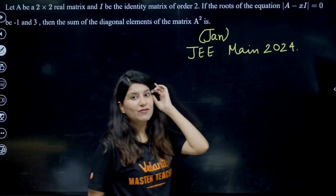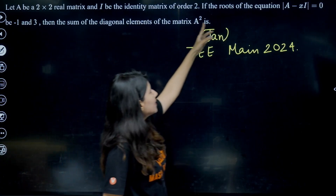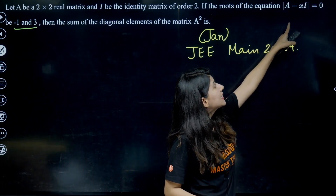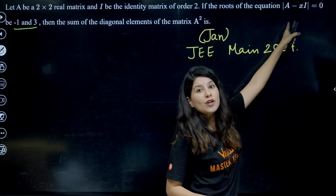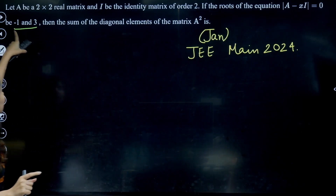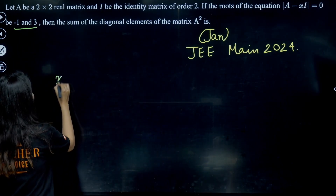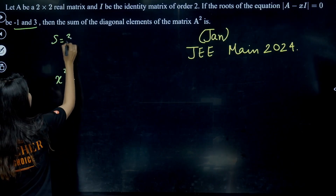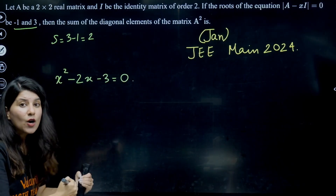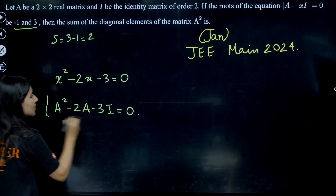Now JEE Main 2024 — a very easy question. Let A be a 2×2 real matrix, I the identity matrix. The roots of det(A − xI) = 0 are given as −1 and 3. Writing the quadratic: x² − (sum of roots)·x + (product of roots) = 0 → x² − 2x − 3 = 0. So the matrix equation is A² − 2A − 3I = 0.